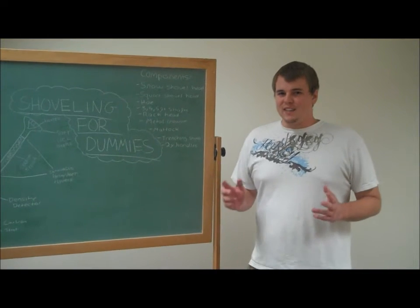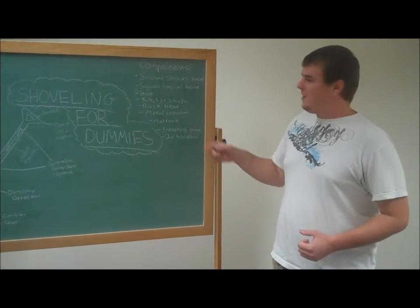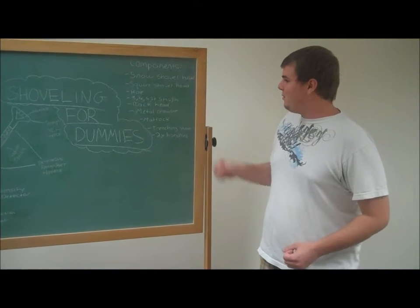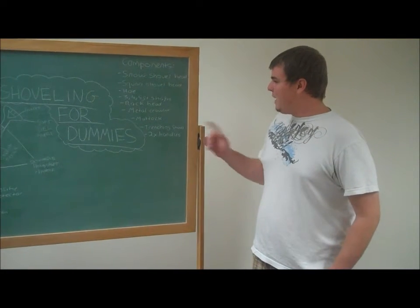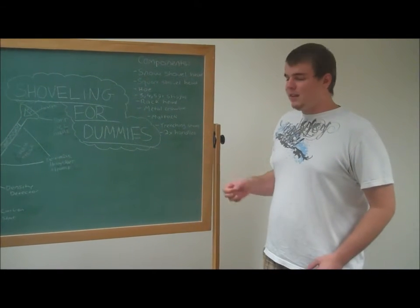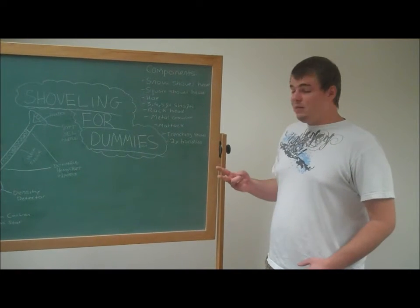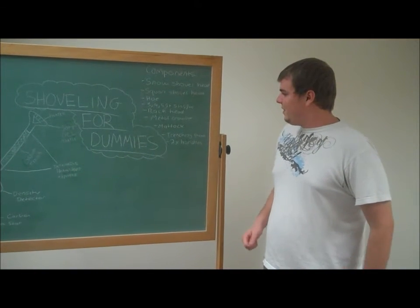I'm excited about this. This shovel comes with many components: a snow shovel head for the winter time, a square shovel head, a hoe, a rake head, and a mattock. It comes with three different types of shafts: a three-foot shaft, a four-foot shaft, and a five-foot shaft. It comes with two different handles, and that is our shovel. That's all our components we have.